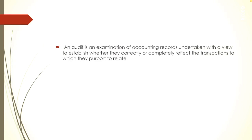That is the auditing process. Auditing will enable the auditor — and that is why the organization goes through the auditing process — because it enables the auditor to satisfy himself that whatever documents are presented, whether that document is the balance sheet or the transactions recorded in the books of account, are properly drawn up so as to give a true and fair view of the stated affairs of the business.